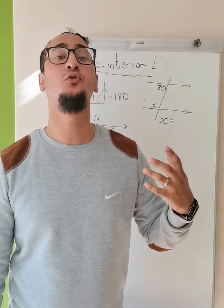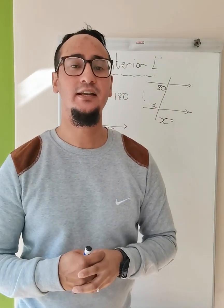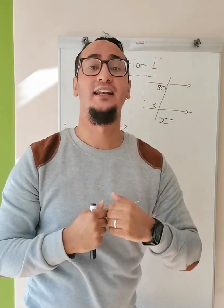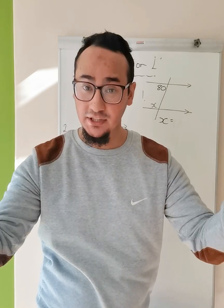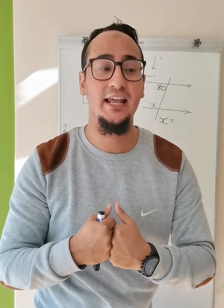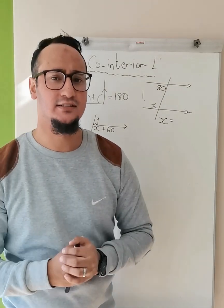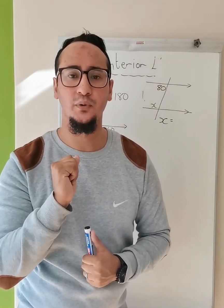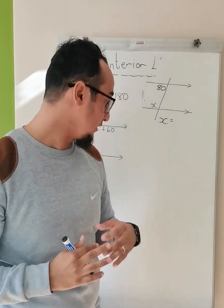Co-interior—let's digest the word. Co means together, interior means it's at the inside of my set of parallel lines. Remember, on the inside, not the outside. What's important about those angles is that they add up to 180 degrees. Another way of saying it: they are supplementary to one another. So let's go into three examples.